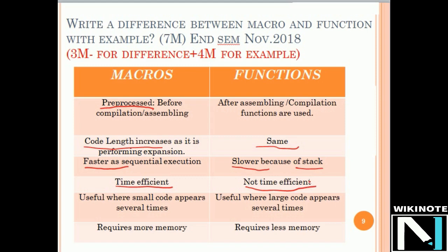Fourth: wherever we have small code that appears several times, we can use macros. When we have large code that appears multiple times, we use functions. Fifth: because of expansion, macros require more memory. Since there is no expansion for functions, they require less memory.